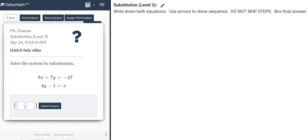Write down both equations. Use arrows to show sequence. Do not skip steps. Box final answer. This is the same thing as yesterday's homework assignment, except it's at a Level 2. It is now Level 3.